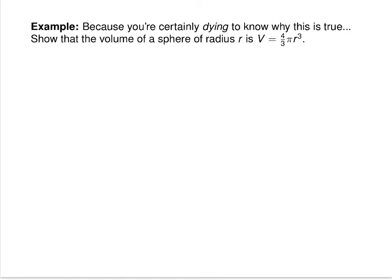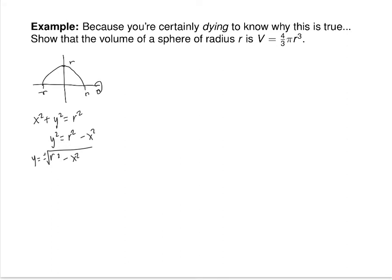This disk method can be used to prove certain geometric formulas. For example, you've probably never been shown why the volume of a sphere is (4/3)πr³. You can prove it using the disk method. You need a curve that, when rotated, gives a sphere — a semicircle of radius r. If you take that semicircle and spin it about the x-axis, that makes a sphere. The equation for the top half of a circle of radius r is y = √(r² − x²).